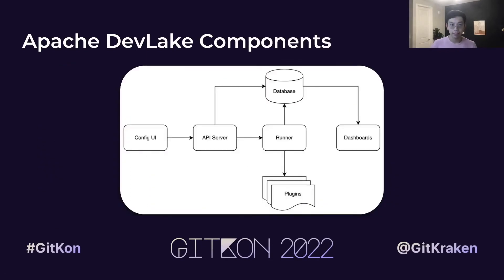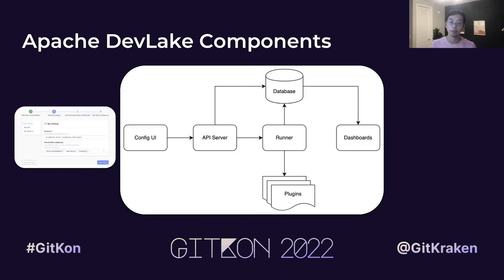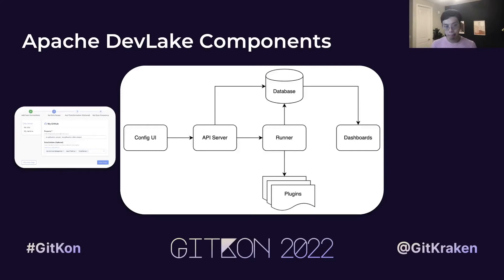DevLake is composed of a few key components. First, we've got ConfigUI, which is a neat front-end where you can properly configure and connect all of your DevOps tools, and make sure you can run the pipelines to get the data you need. The API server is DevLake's core service, and the runners do most of the heavy lifting.